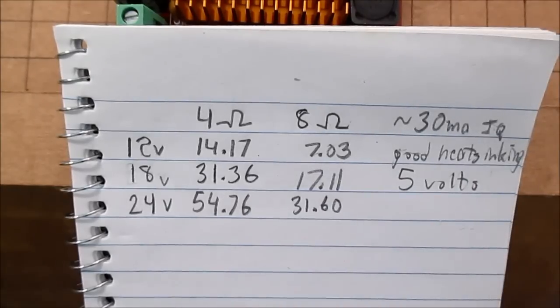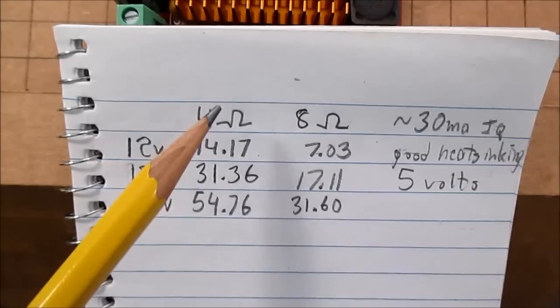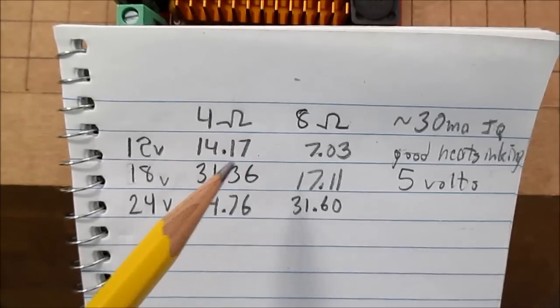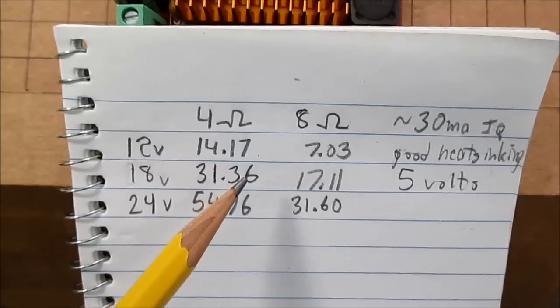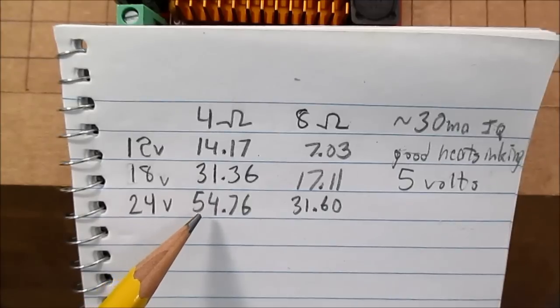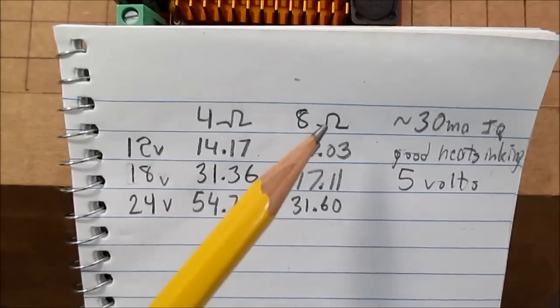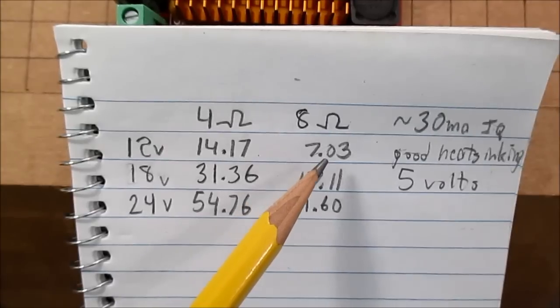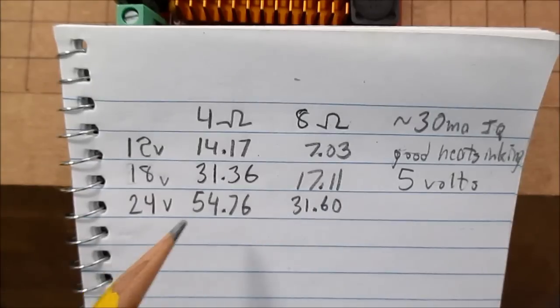And here are the output power tests. With the power supply voltage at 12 volts, 4 ohm load, again, we got the 14.17 watts. Power supply at 18 volts, we got 31.36. And look at this. At 24 volts, 4 ohm load, we got 54.76 clean watts of output. That is pretty darn good. 8 ohm load, power supply at 12 volts, we got around 7 watts. 18 volts, we got around 17. And at 24 volts, we got 31.6 watts.